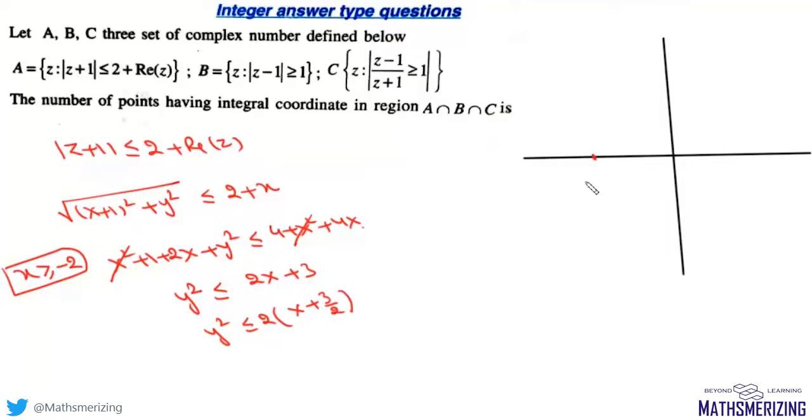We mark a point at -3/2 and form a parabola opening right. So we have this parabola.